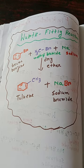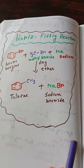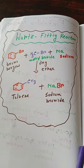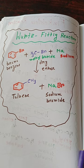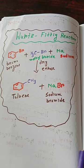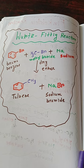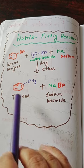The Wurtz-Fittig reaction is similar to the Wurtz reaction, but the Wurtz reaction takes place only with aliphatic halides. In the Wurtz-Fittig reaction, we use two different kinds of halides: an alkyl halide and an aryl halide.